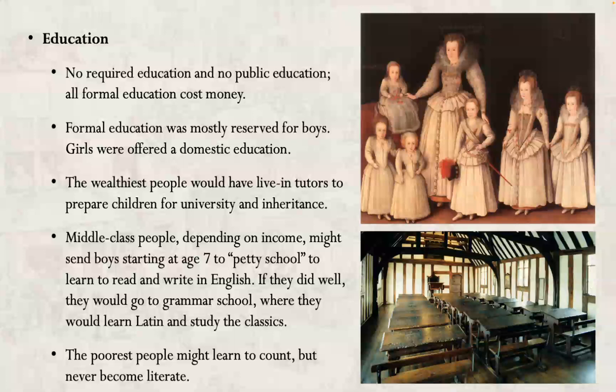They would study the classics in their original languages — in some cases Greek — or read translations of writers like Socrates, Plato, Aristotle, Hippocrates, and more recent writers like Erasmus. Of course they would read the Bible, including in its original Vulgate Latin form. They would leave school with a really robust understanding of the ancient world, especially its mythology and scholarship — and we'll see a lot of that in Romeo and Juliet and in all of Shakespeare's plays. The poorest people might learn basic numeracy to conduct business, but they might never become literate.